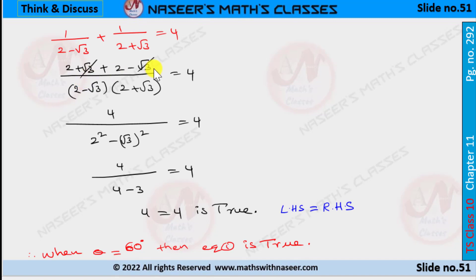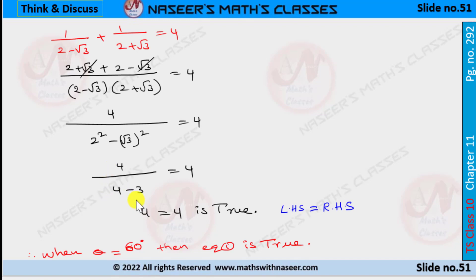The +√3 and −√3 cancel, so the numerator becomes 2 + 2 = 4. The denominator is in the form (a − b)(a + b) = a² − b², giving 2² − (√3)² = 4 − 3 = 1. The numerator is 4 and denominator is 1, so we get 4 = 4. This is true! Since LHS = RHS, for θ = 60°, equation 1 is true.